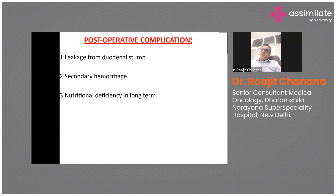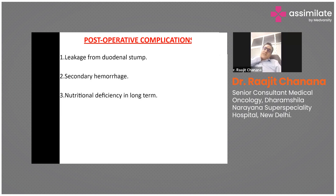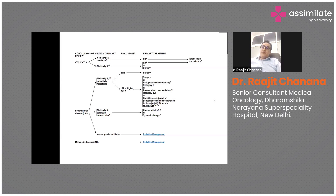Common post-operative complications include leakage from the duodenal anastomosis, which is a severe complication, and secondary hemorrhage. Short gut syndrome can occur because part of the gut is removed, leading to increased diarrhea and nutritional deficiencies in the long run, including vitamin B12 and calcium deficiencies, which need supplementation.